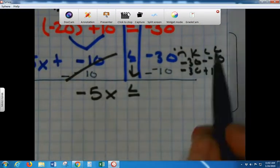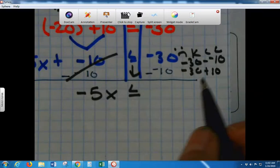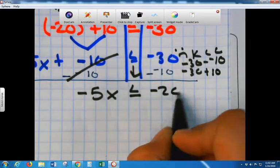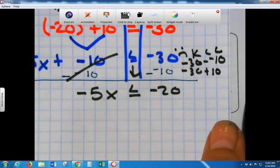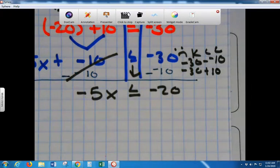What's negative 30 plus positive 10? Negative 20. Negative 20. Why is it negative? Because it's a negative 30. Because it has more digits. I don't know.